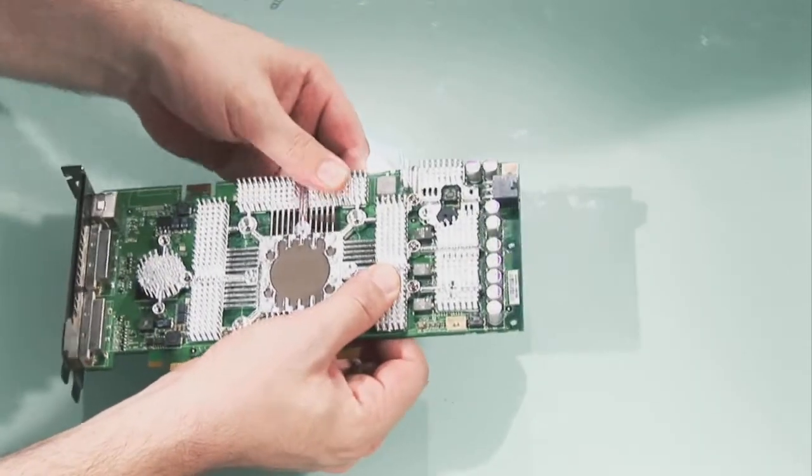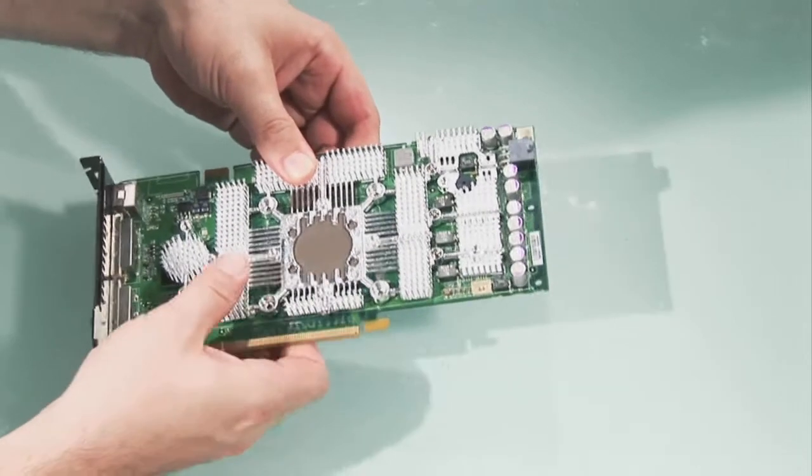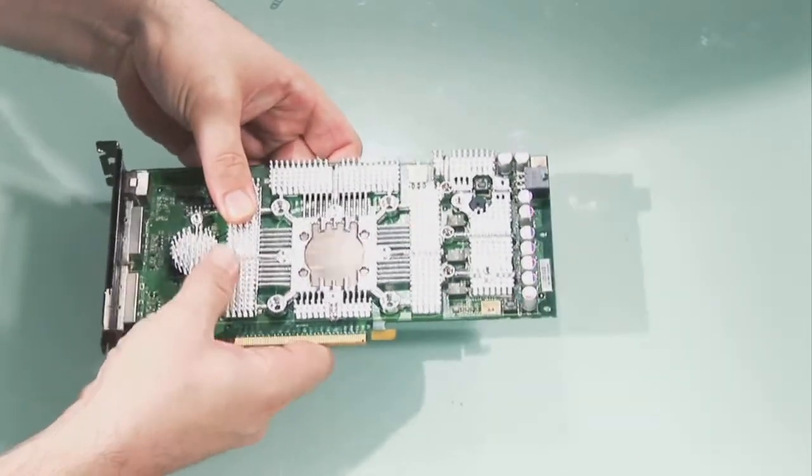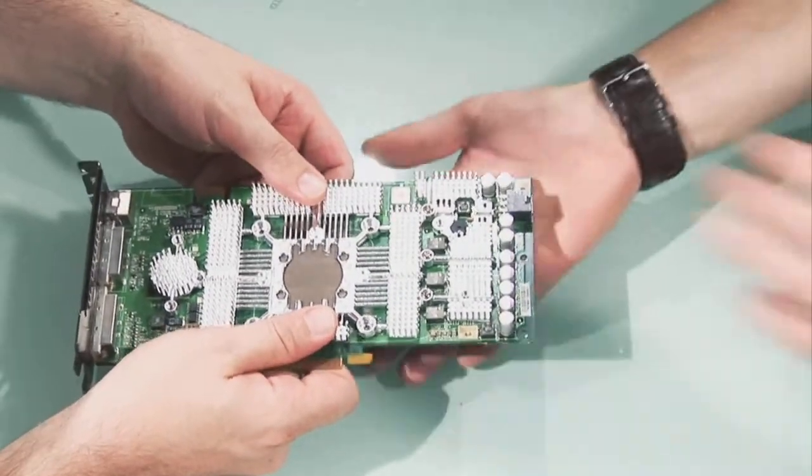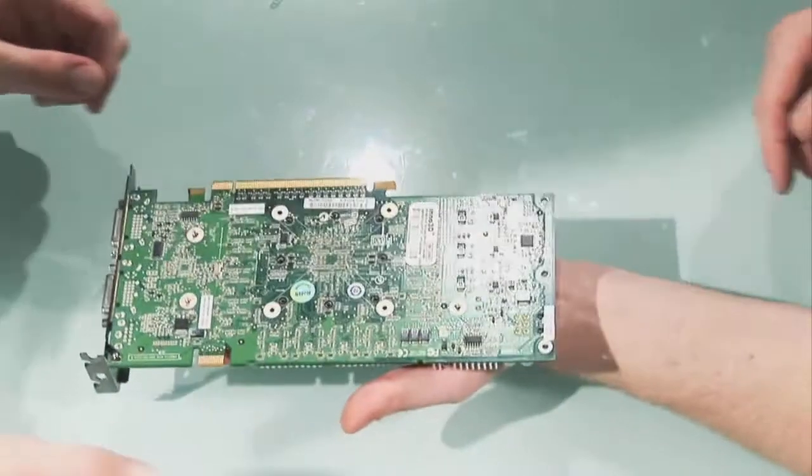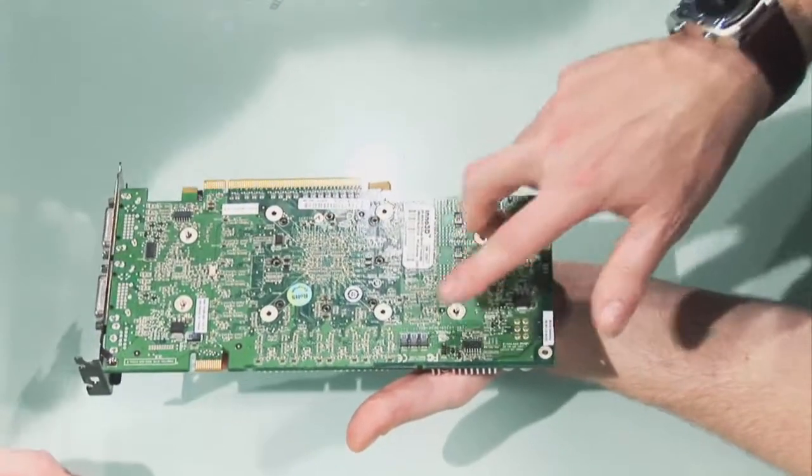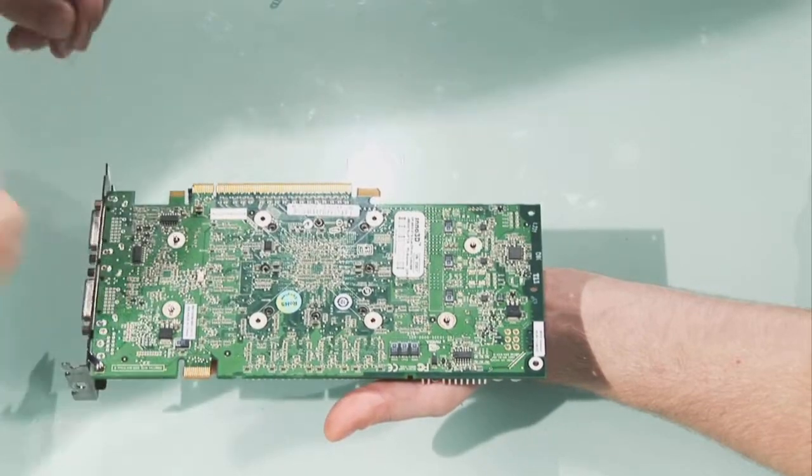So don't be afraid to give it a bit of a gentle squeeze, as the actress said to the bishop. I'm sure she did. Right, now what? Turn the card over. What we need to do, we've got four posts here. We just need to put some screws on there.